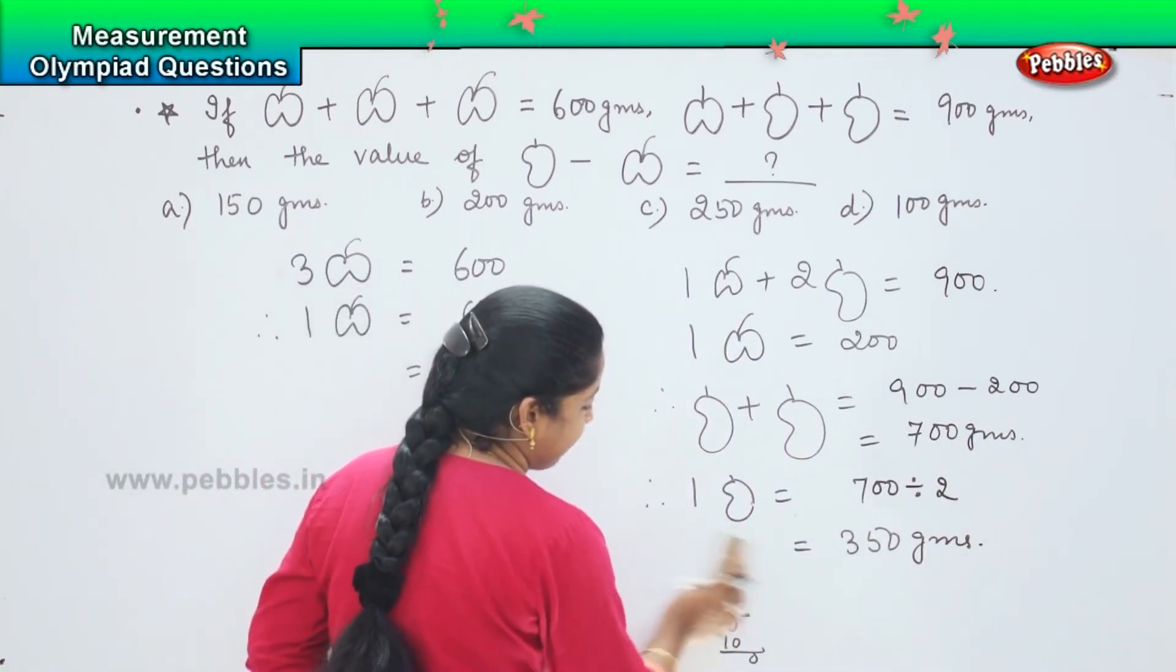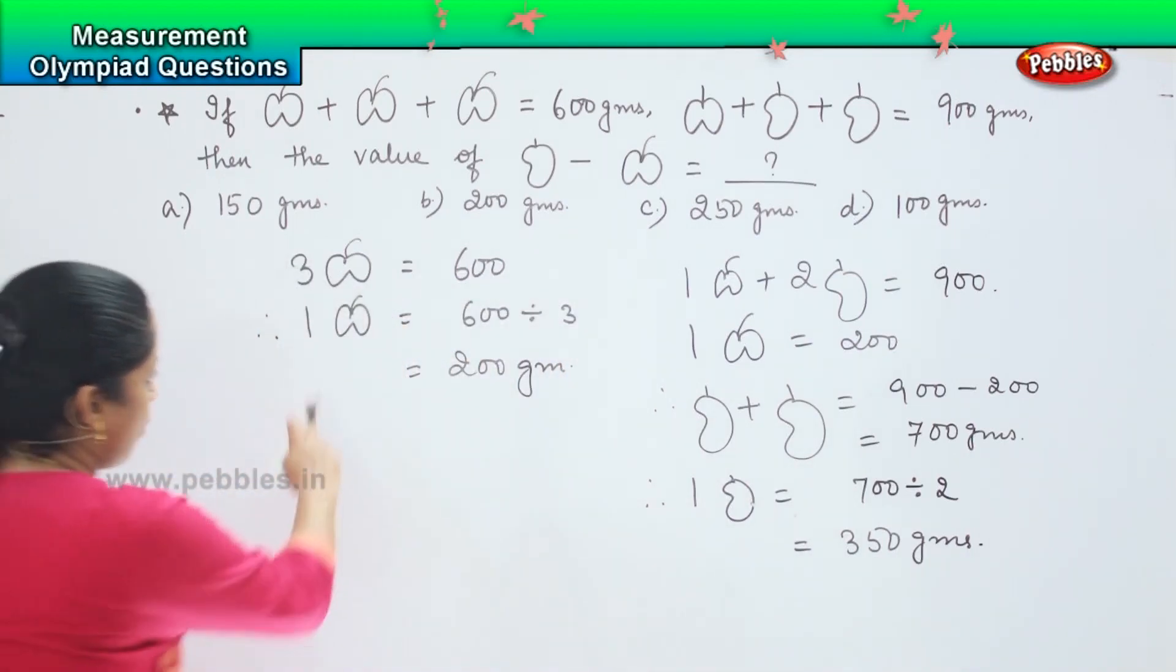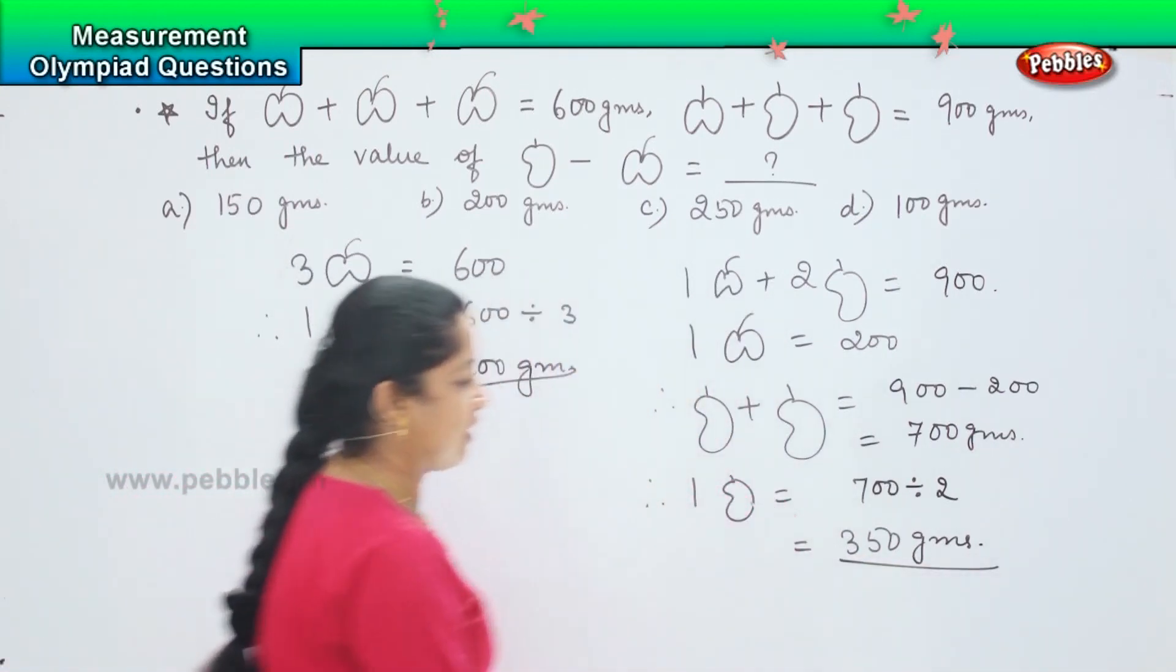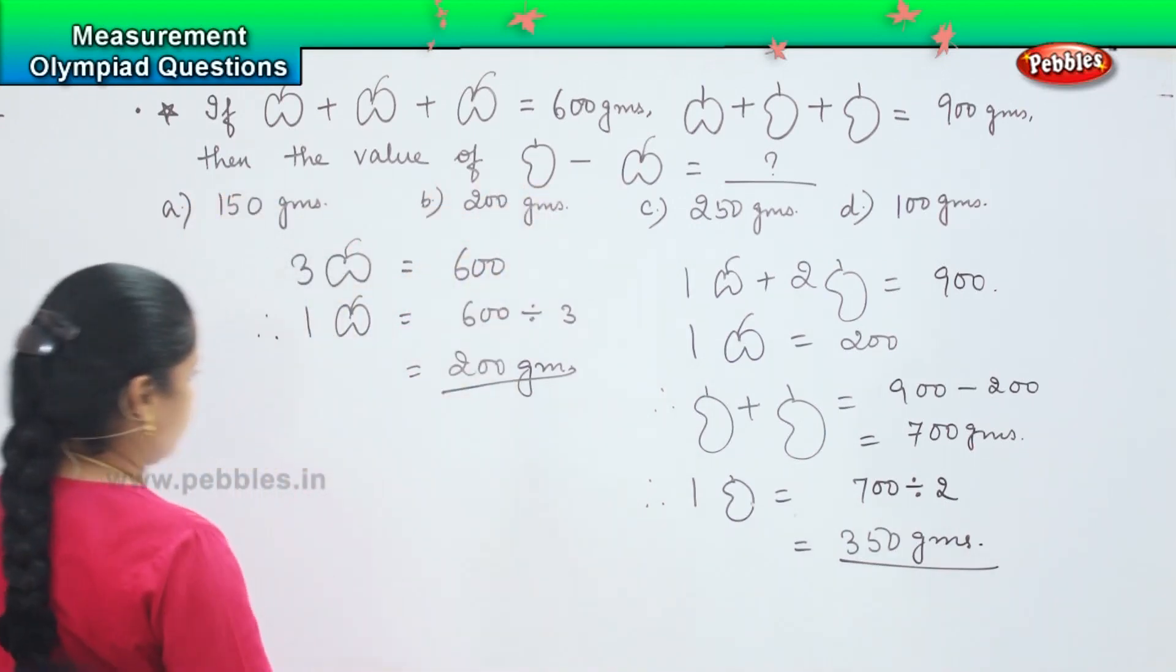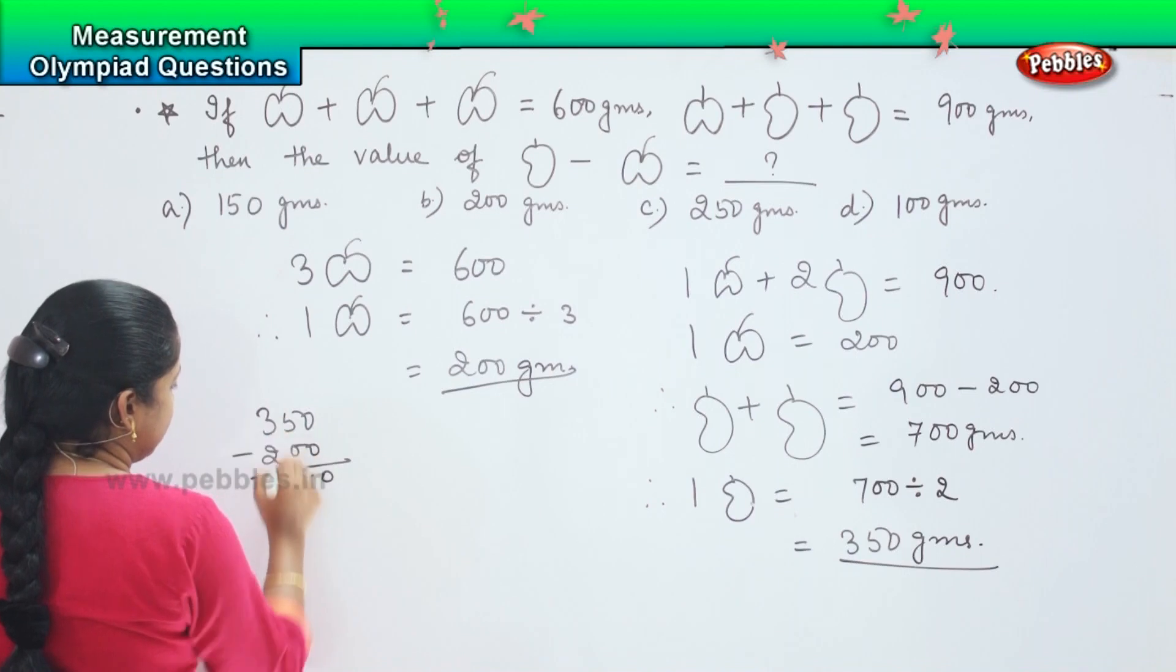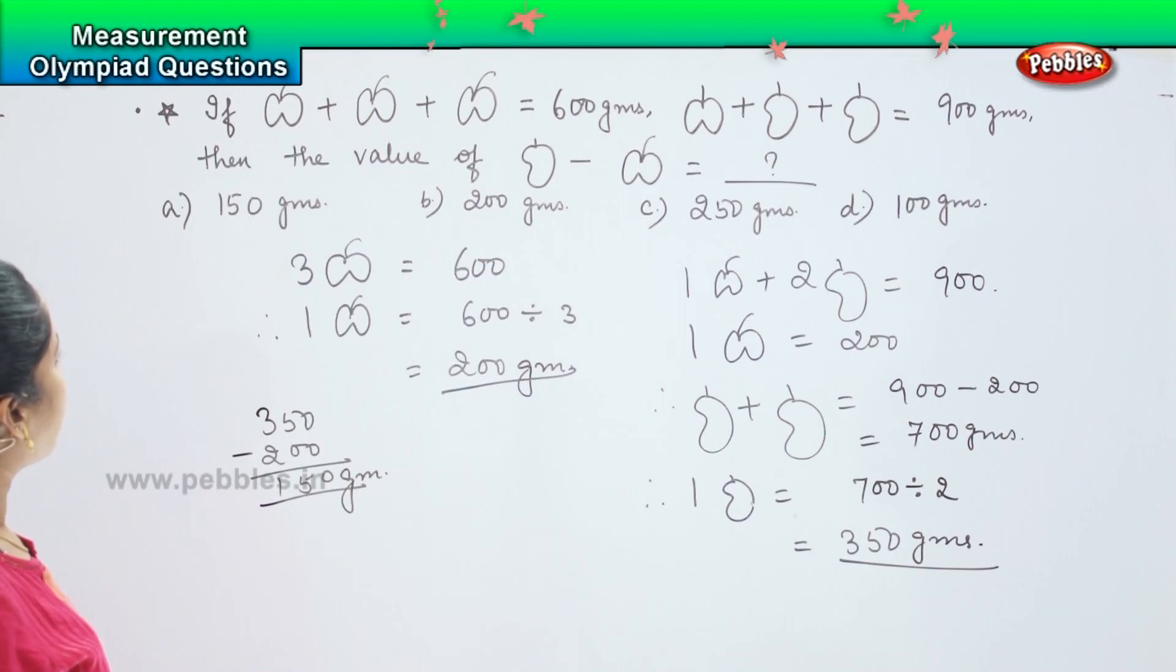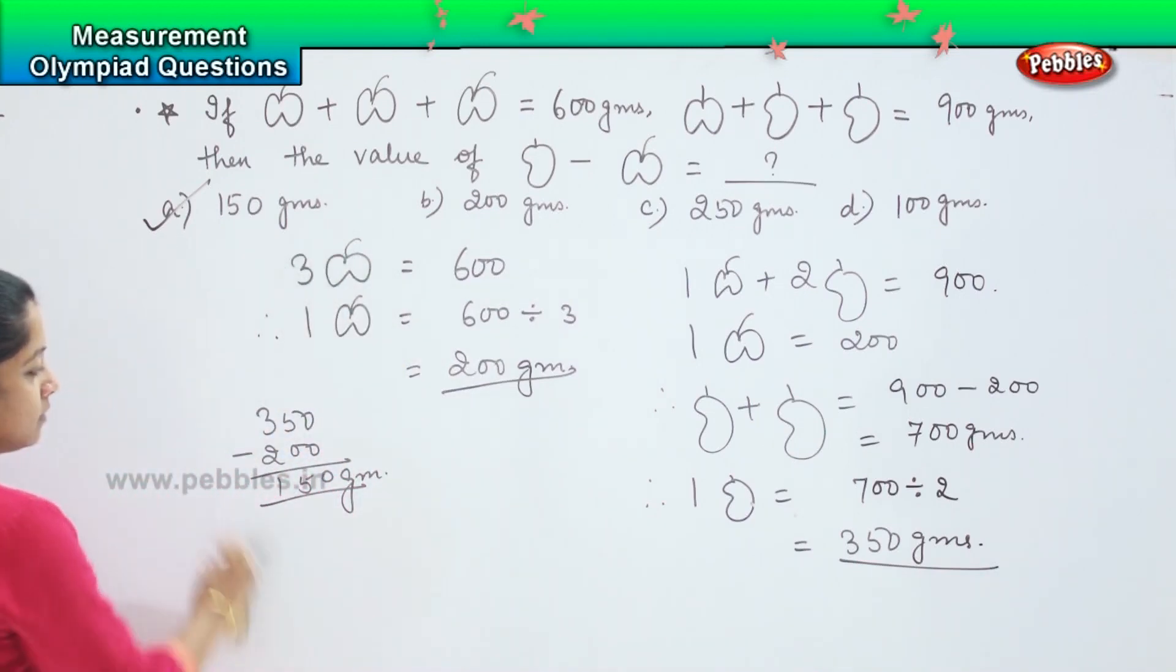So now we have found out the value of one apple and one mango. One apple is 200 grams and one mango is 350 grams, and they have asked us find out the value of mango minus apple. So which means 350 minus 200, which is 150 grams. Where can you find 150? Option A is my right answer. Are you clear?